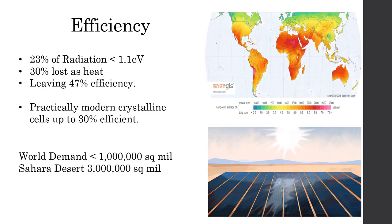Looking at efficiencies and sunlight radiation, 23% of which is less than the 1.1 electron volts required. Furthermore, 30% is lost as heat. This leaves at best 47% efficiency. However, in practicality, modern crystalline cells are up to 30% efficient. Based on this, world demand requires 1 million square miles, while the Sahara Desert is 3 million square miles.